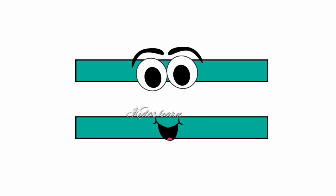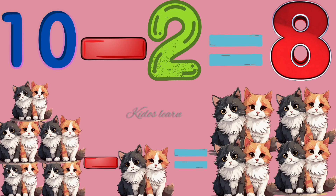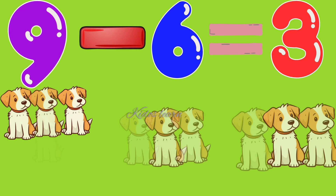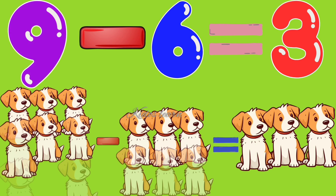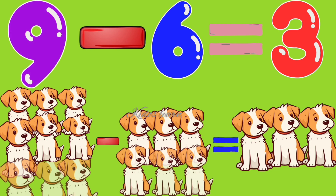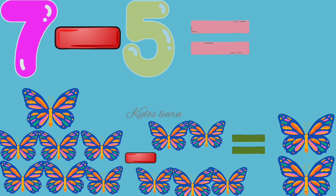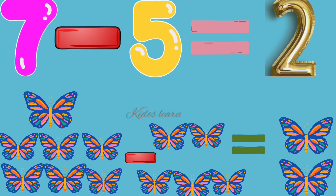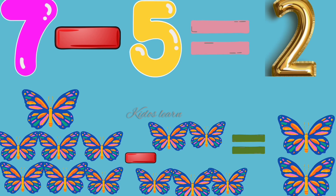Ten minus two equals eight. Nine minus six equals three. Seven minus five equals two.